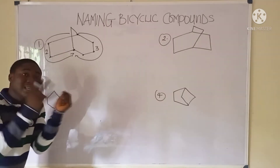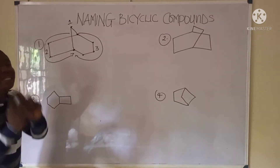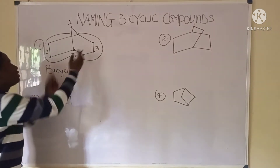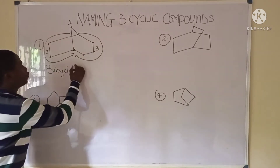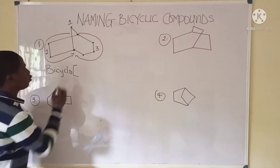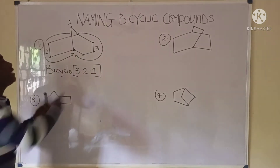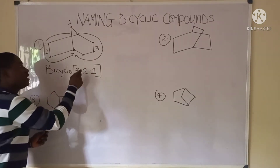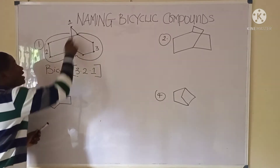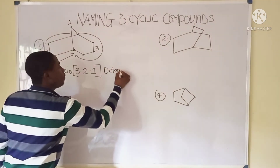There is one carbon that joins these two bridgehead carbons together, so that gives us one. In naming the bicyclic compound, the numbers go in descending order: three, two, one. Counting all carbons: three plus two plus one equals six, plus the two bridgehead carbons makes eight, so the parent chain is octane.